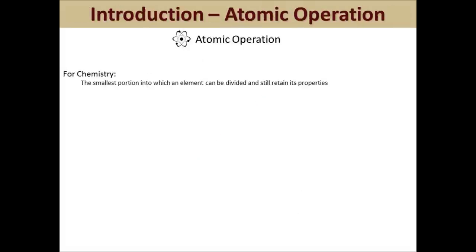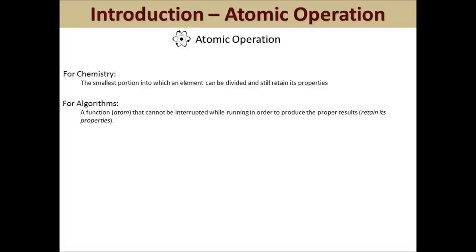Let's talk about atomic operations, as some early computer science students may have trouble grasping this idea. The brief definition in chemistry of an atom is the smallest portion into which an element can be divided and still retain its properties. This also applies to an algorithm — a function that cannot be interrupted while running in order to produce the proper results. An atomic operation can contain multiple commands which accomplish one task, but in order to accomplish the task, it cannot be interrupted.